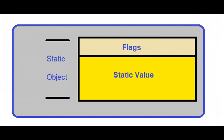DNP3 uses the term static value to refer to an input point's current state or value at the current time; static value and current value are synonymous. DNP3 uses the term static object to refer to a point's static value plus a set of true/false flags that define current characteristics or qualities about each point — for example, whether the point is online or not. Some flags such as online are the same for all input point types; some flags are point-type specific.